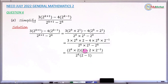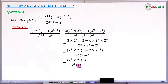Now simplify the brackets. At the numerator level, 2 times 2 raised to minus 1 gives 1, so 3 minus 1 gives 2. At the denominator level, 2 minus 1 gives 1. So you now have 2 raised to k times 2 times 2 in the numerator, divided by 2 raised to k times 1 in the denominator. Cancel 2 raised to k, leaving 2 times 2 equals 4, divided by 1, which equals 4. The simplified form of the fraction is 4.